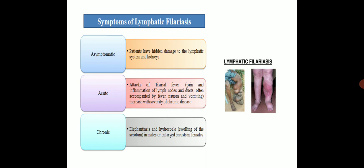Coming to the symptoms of lymphatic filariasis: asymptomatic patients have hidden damage to the lymphatic system and also the kidney. In case of acute attack of filarial fever, there is pain and inflammation of lymph nodes and ducts, often accompanied by fever, nausea and vomiting. The severity increases with chronic disease. The third symptom is chronic elephantiasis and hydrocele — swelling of the scrotum in males or enlarged breast in females.